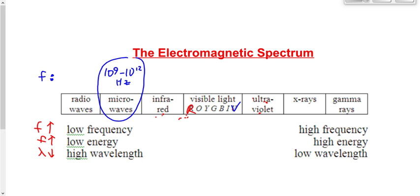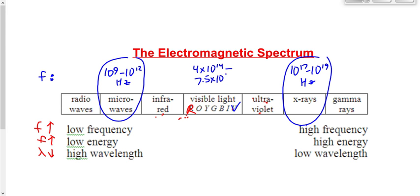The frequency of x-rays is 10¹⁷ to 10¹⁹ hertz. The frequency of visible light — and we need to be specific here because the range is so narrow — is 4×10¹⁴ to 7.5×10¹⁴ hertz. If I give you a frequency of 10¹⁰, we know it's microwaves. If I give you 10¹⁸, it's x-rays. If you know microwaves start at 10⁹, then anything below that is radio waves. If I give you 10¹³, you know it's not microwaves or visible light, so it must be infrared.